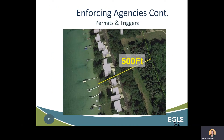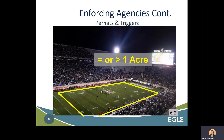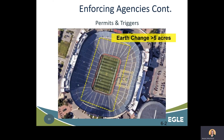SCSC permits are required when an earth change takes place within 500 feet of a lake or a stream. A lake is defined as one acre of open surface water, and a stream is defined by definite bed and banks with visible evidence of continued occurrence of water. A permit is also required for work one acre or more in size — an acre is almost the size of a football field. If an earth change is greater than five acres, the landowner must apply for a Notice of Coverage, or NOC, from EGLE after receiving the SCSC permit. Landowner names must be consistent between the SCSC permit and the NOC application, or the application is considered incomplete.